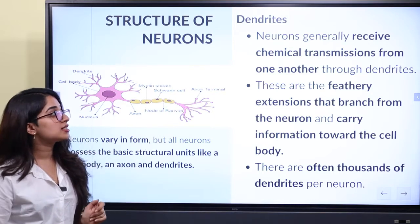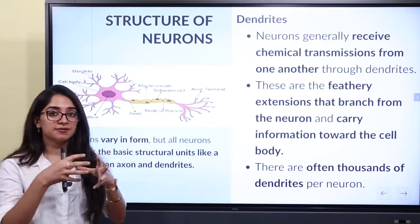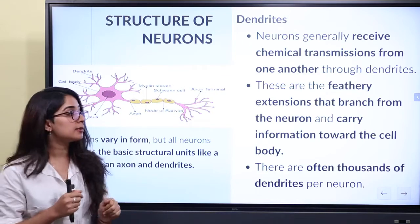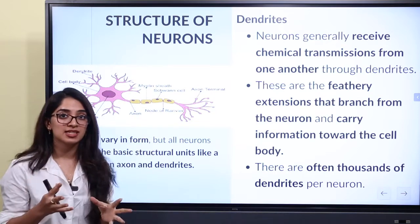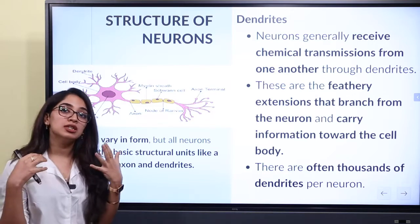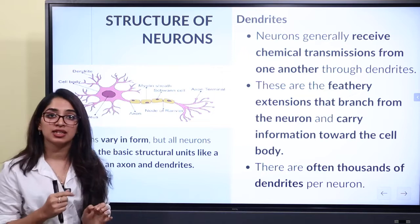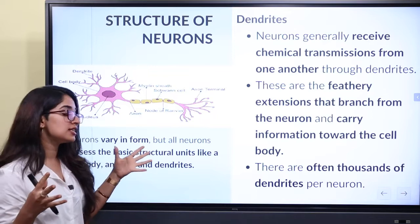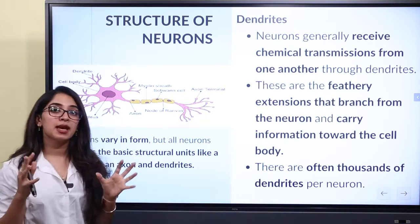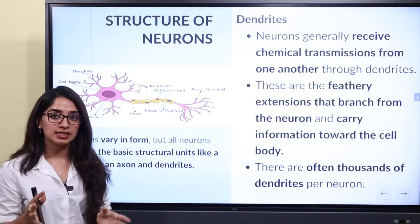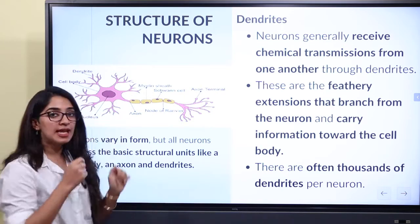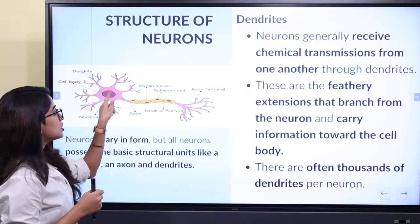Neurons generally receive chemical transmissions from one another through dendrites, which connect different cells or neurons. Dendrites are feathery extensions that branch from the neuron and carry information toward the cell body. When we carry a message toward the cell body, we call it dendrites. There are often thousands of dendrites per neuron. Their function is to receive chemical transmissions headed toward the cell body.